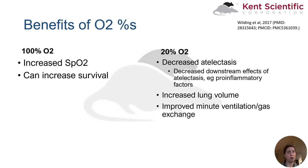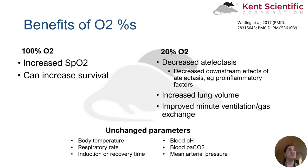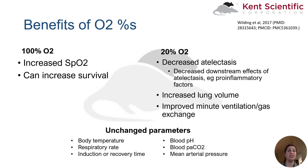Interestingly, many parameters are unchanged when 100% oxygen or 20% oxygen are used. These include body temperature, respiratory rate, induction and recovery time — so it takes about the same amount of time for an animal to go under anesthesia and recover from it. Blood acidity and carbon dioxide are not changed, and mean arterial pressure is not changed. These results have been recapitulated in many different species, from mice and rats to dogs and horses, even lizards.